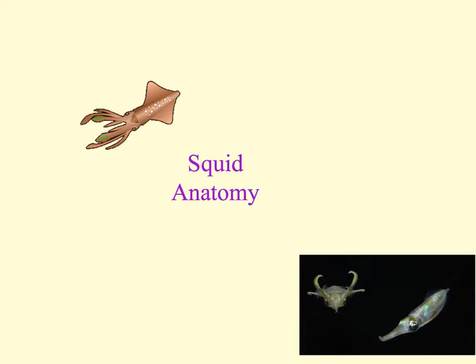Molluscs also have a structure called a protostome, meaning that during embryonic development the blastopore will form the mouth. They possess a coelom, which is a hollow space in the body cavity. Molluscs also have an organ system level of development, so we'll see those organs suspended in the body cavity by mesentery.